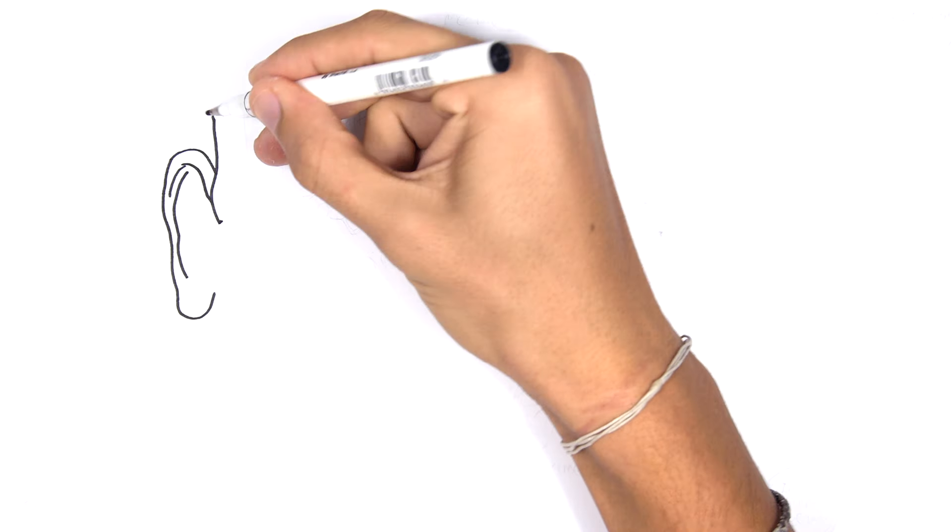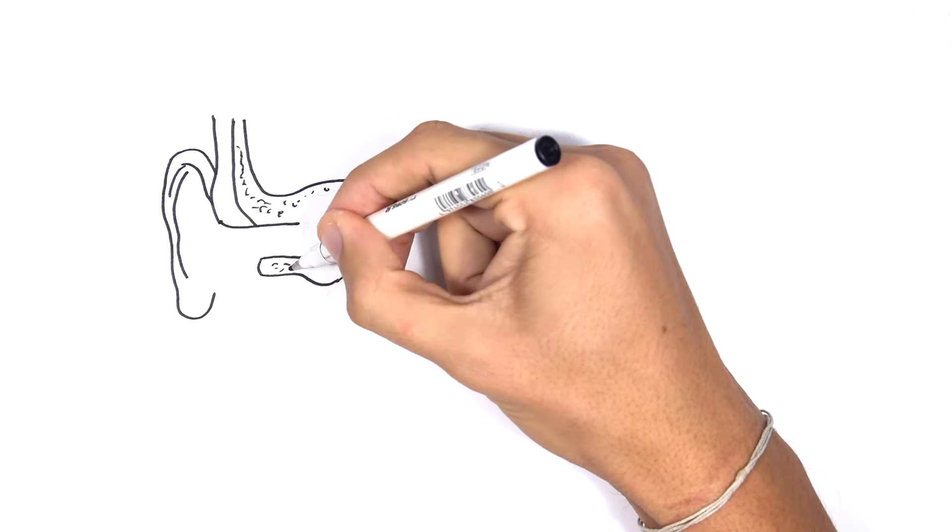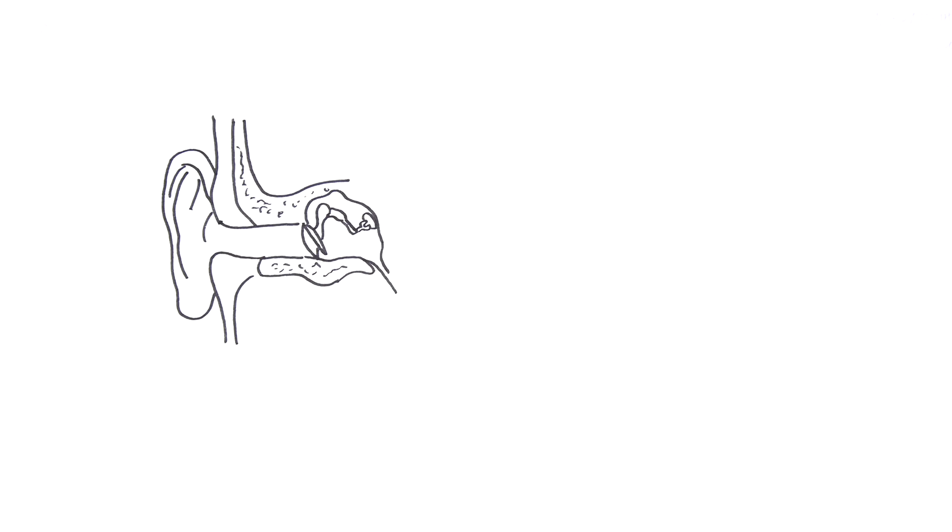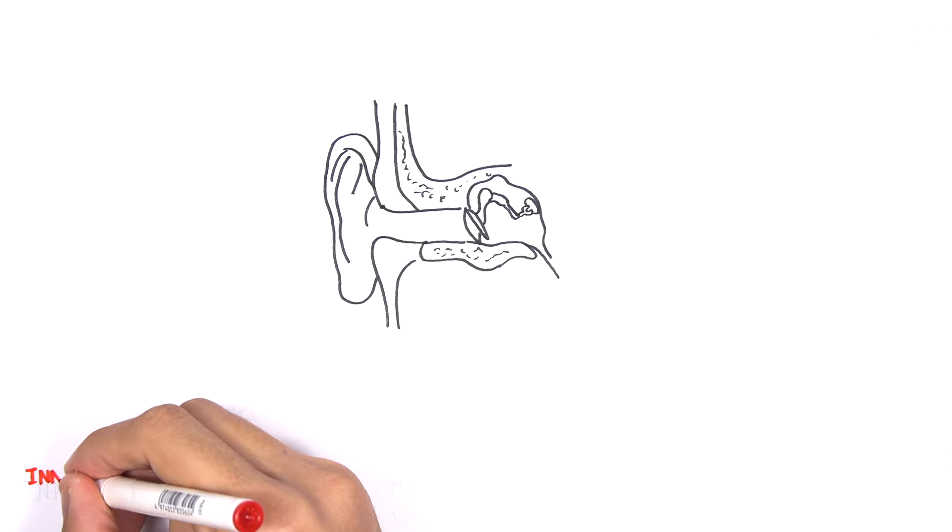In this video we will learn about the external and middle ear. So here is the ear. We can see the external, middle and inner ear. Let us learn about the innervation of the external ear first.